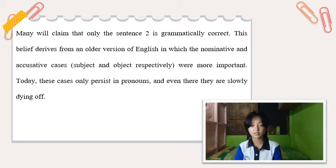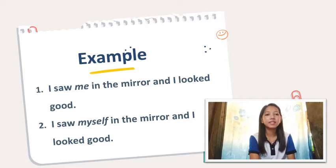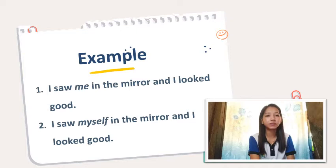Good day, I am Mariel Digamola, and I will be reporting on the words 'me' and 'myself' in a sentence. The first sentence uses 'me': 'I saw me in the mirror, and I looked good.' The second uses 'myself': 'I saw myself in the mirror, and I looked good.'